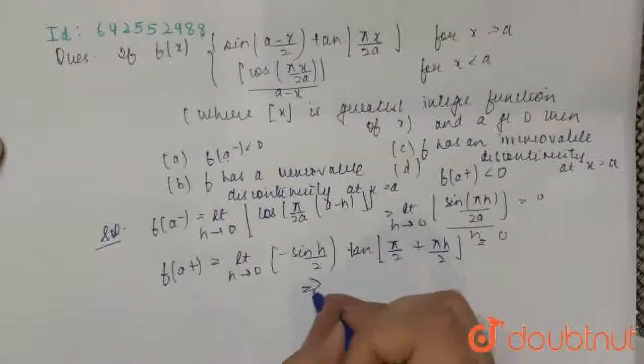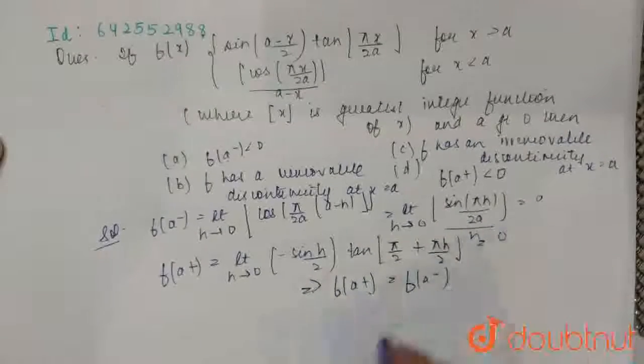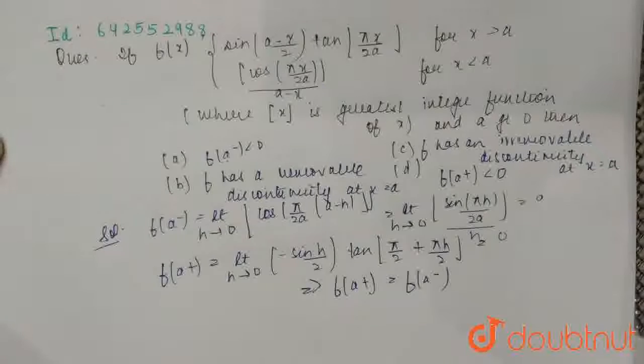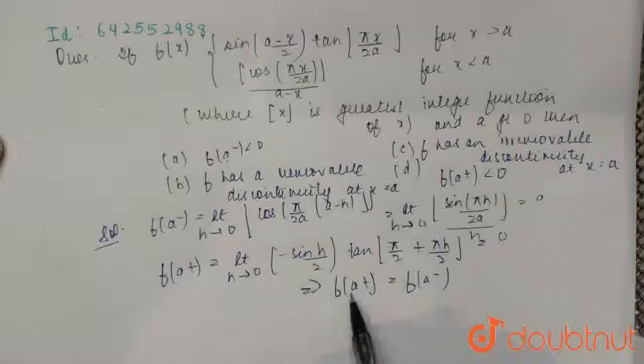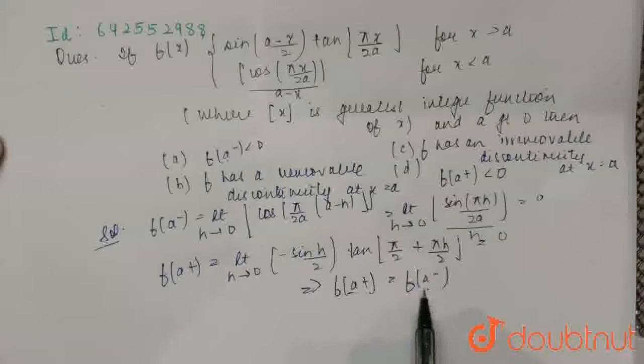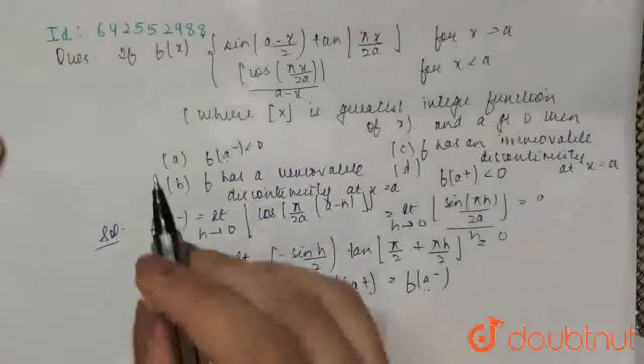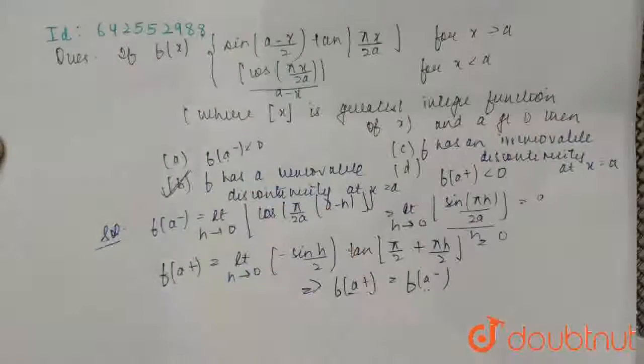From here we know that f of a plus equals f of a minus. Thus, f(x) has removable discontinuity at x equals a because these both are equal. That means the correct option is b. Thank you.